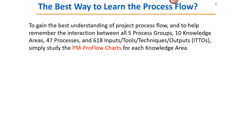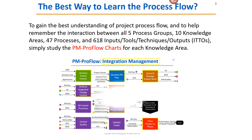To gain the best understanding of project process flow and to help remember the interaction between all five process groups, 10 knowledge areas, 47 processes, and 618 ITTOs — which stands for Inputs, Tools, Techniques, and Outputs — simply study the PMProFlow charts for each knowledge area.